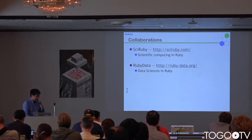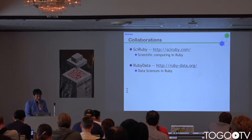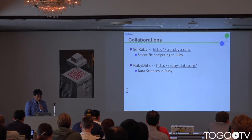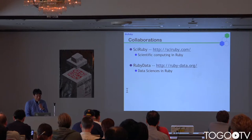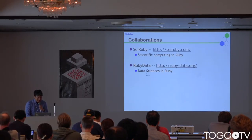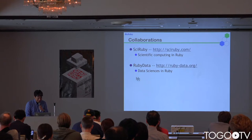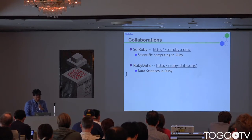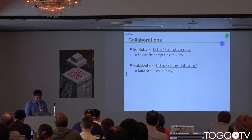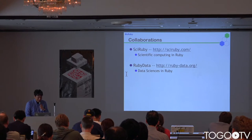In the Ruby community, there is SciRuby for scientific computing in Ruby, and Ruby Data for data sciences in Ruby, including people developing machine learning libraries.